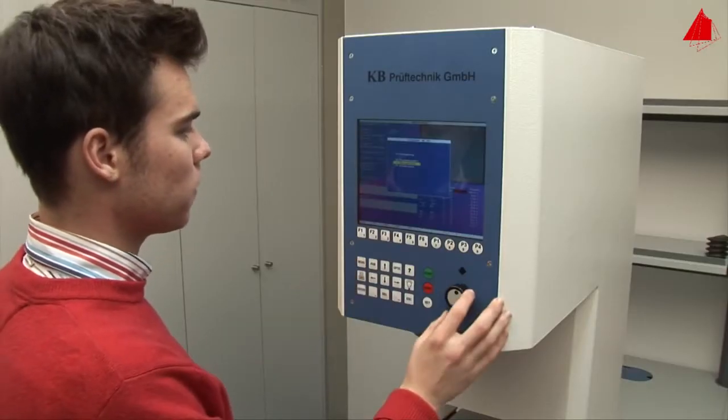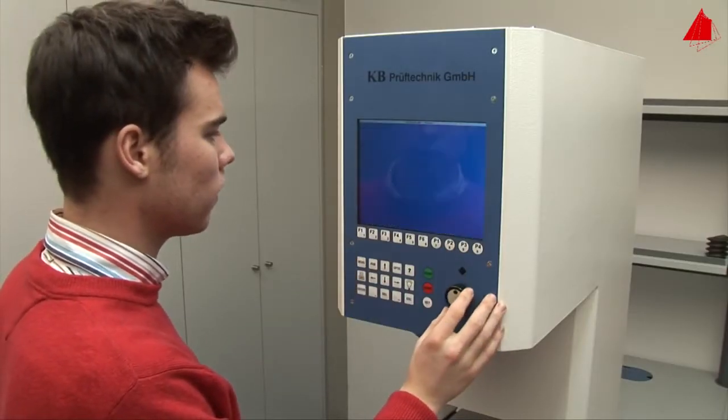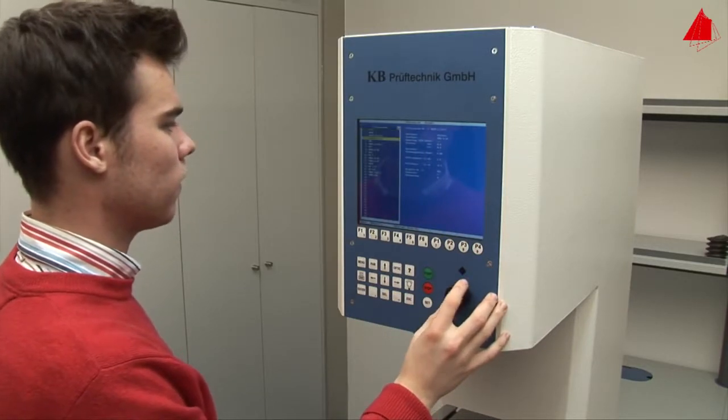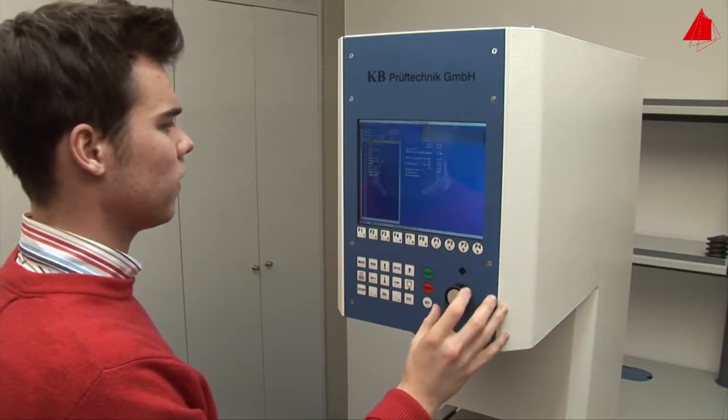A monitor and the control panel are positioned in the upper part of the machine. These are used to select and program different testing methods.